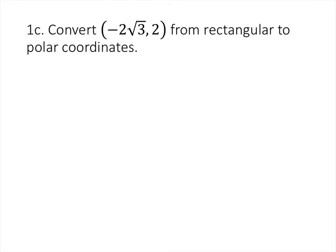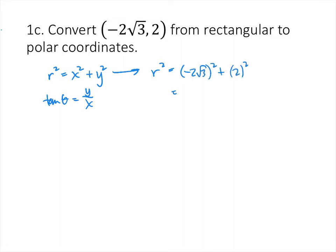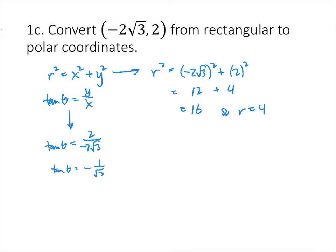For the point (-2√3, 2), since it's not on a coordinate axis, we use the formulas r² = x² + y² and tan(θ) = y/x. So r² = (-2√3)² + 2² = 12 + 4 = 16, giving r = 4. Then tan(θ) = 2/(-2√3) = -1/√3, or -√3/3. Taking the inverse tangent gives θ = -π/6.